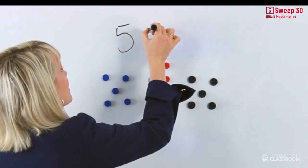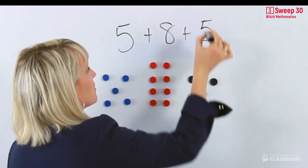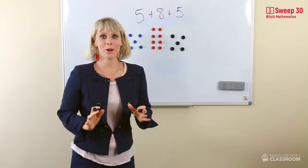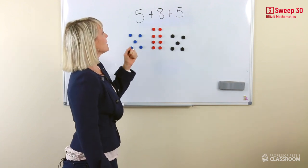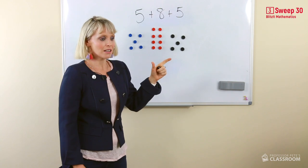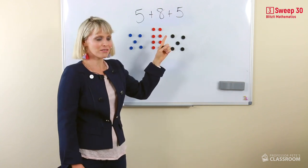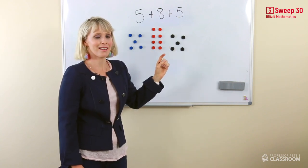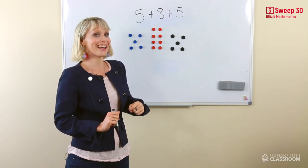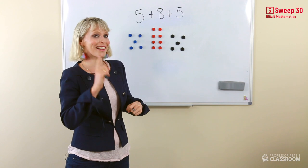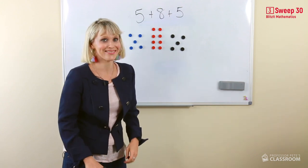5 and 8 and 5. Now, let's work it out like we normally do. 5 and 8 equals 13. Now I have to add 5. I'm getting a bit confused. Can I teach you a really tricky way to work it out in your head? It's really cool. Are you ready?